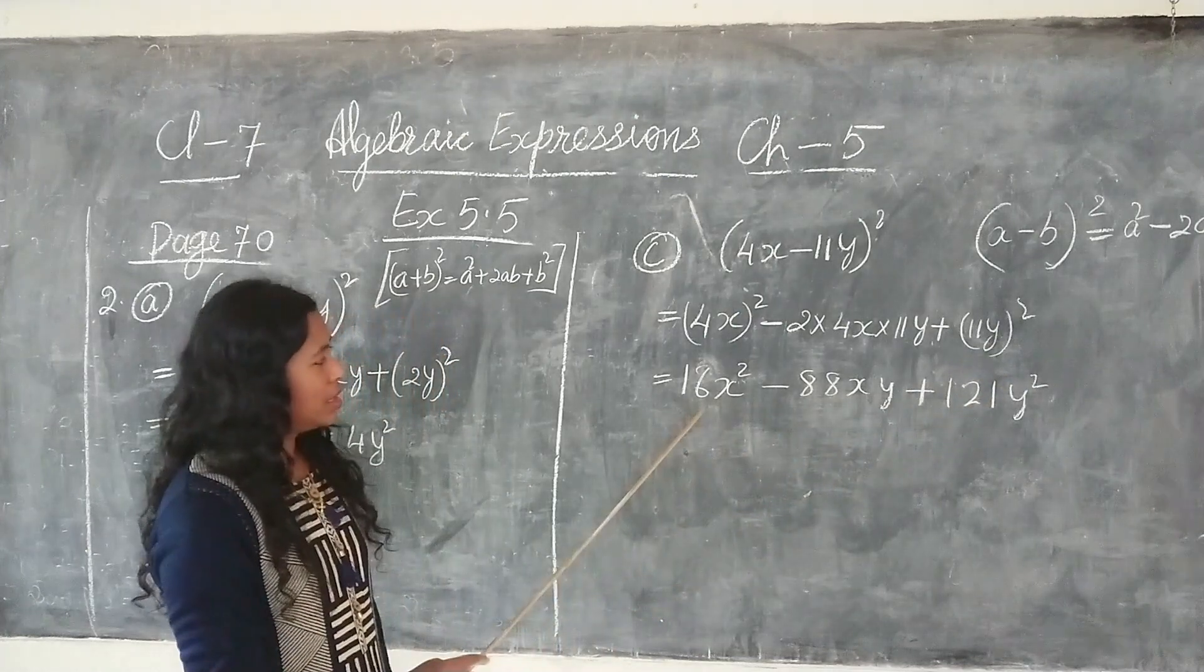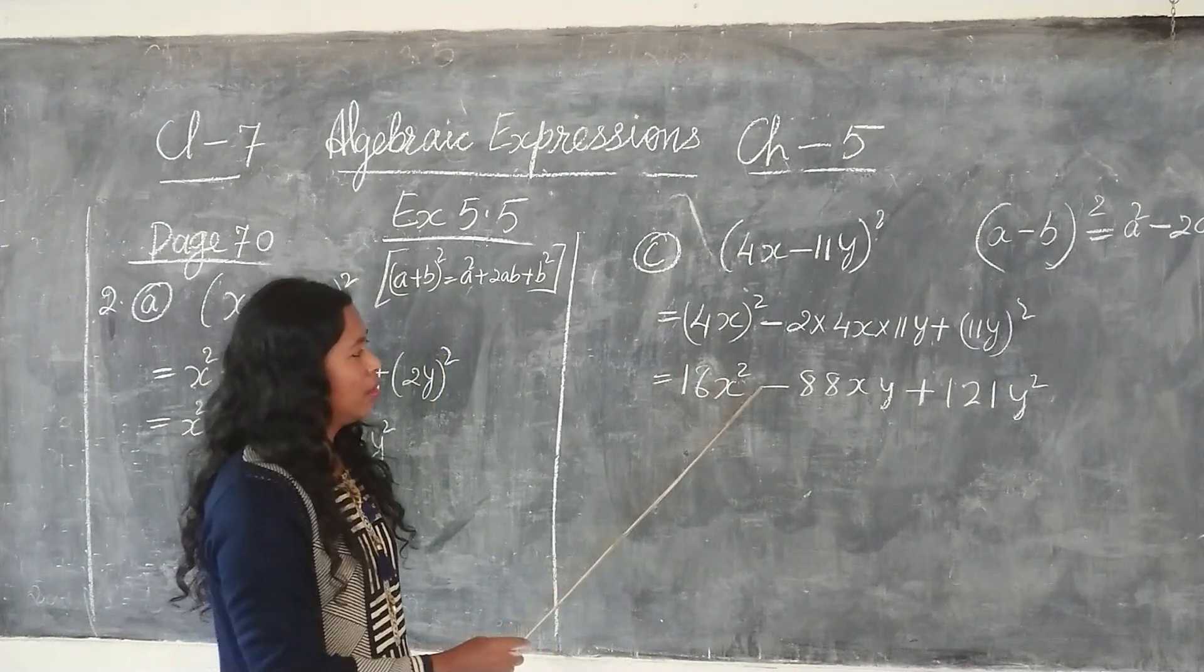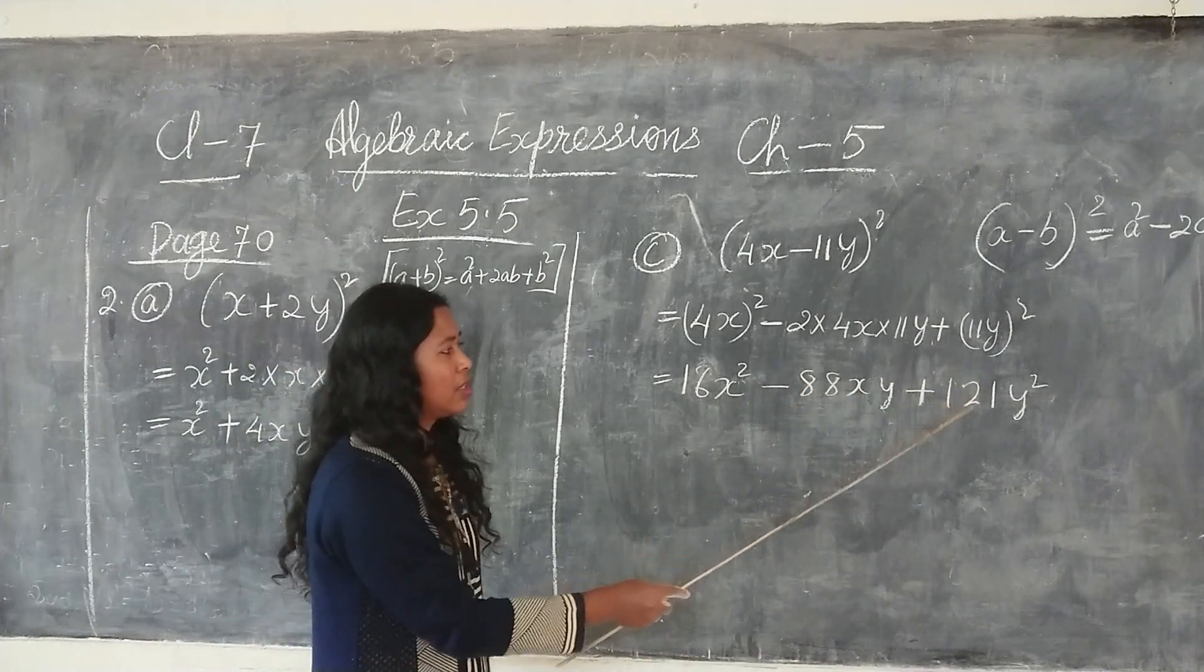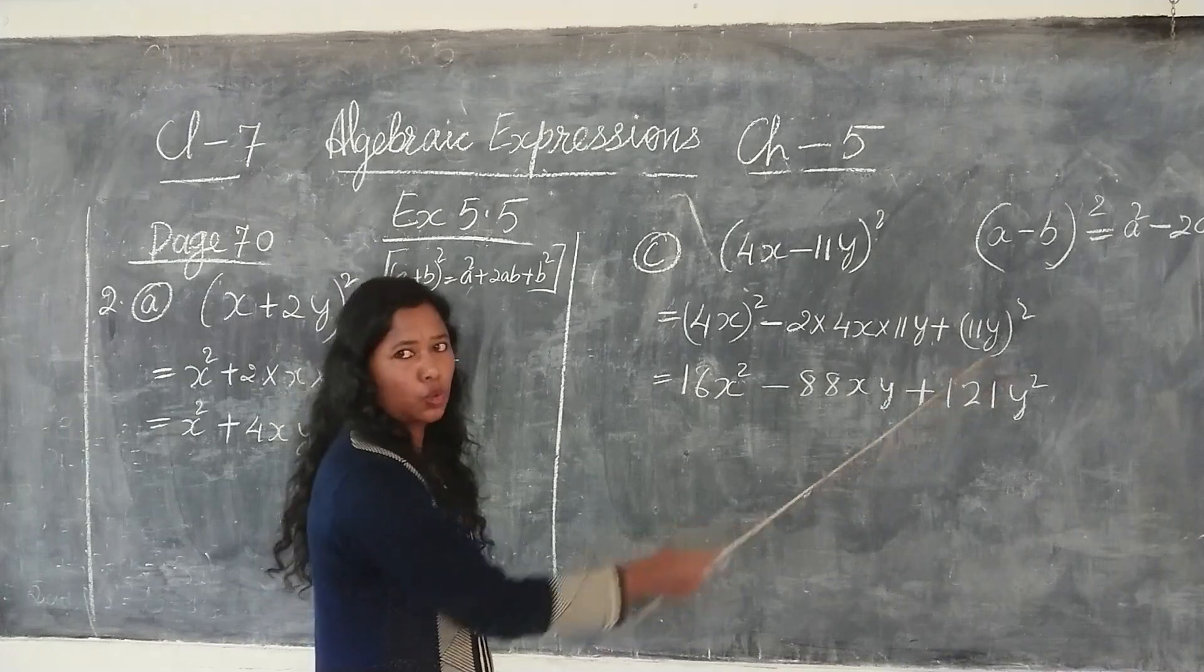So the answer is 16x square minus 88xy plus 121y square.